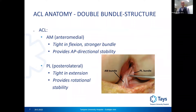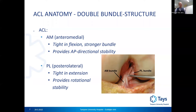The ACL is a double bundle structure. When you dissect the ACL, you can identify the anteromedial and posterolateral bundles. The anteromedial bundle is tight in knee flexion; it is the stronger of the two bundles and provides anteroposterior and posterior directional stability.